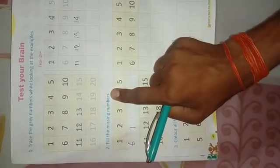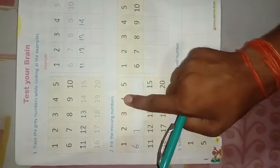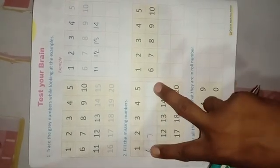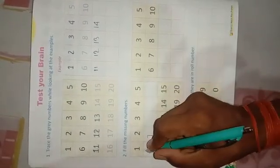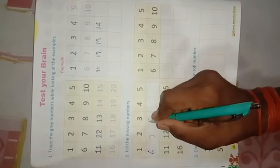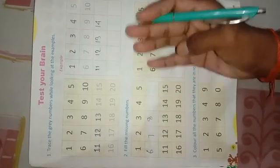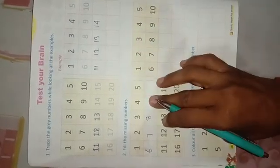Fill the missing numbers. 1, 2, 3, 4, 5 in this boxes. 6, 7, 8, 9, 10, 11, 12, 13, 14, 15, 16, 17, 18, 19, 20.